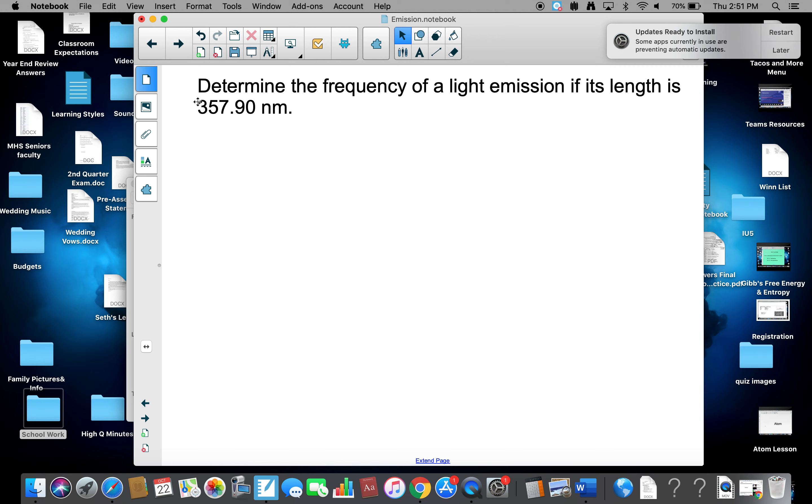So let's start with the problem. Determine the frequency of emission if its length is 357.90 nanometers. So we take our equation for frequency, nu equals C over lambda. We don't know nu.